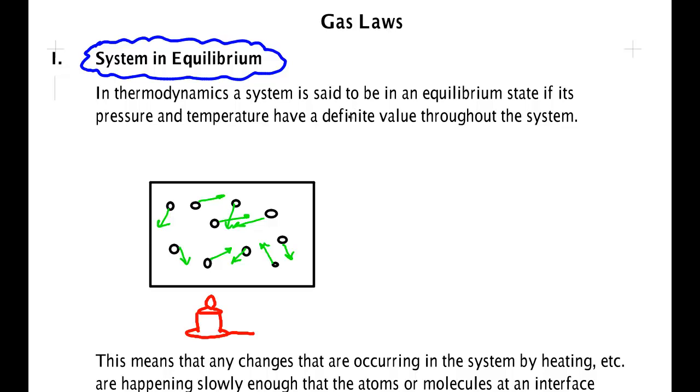A system is said to be in an equilibrium state if when you heat it or put it under pressure or do anything, you do it slowly enough so that whatever disturbance you cause has a chance to be transferred throughout the system.